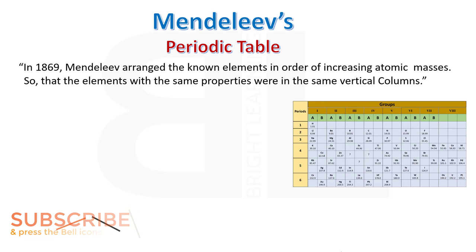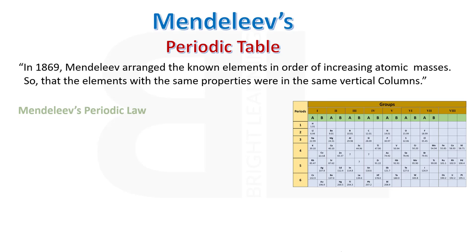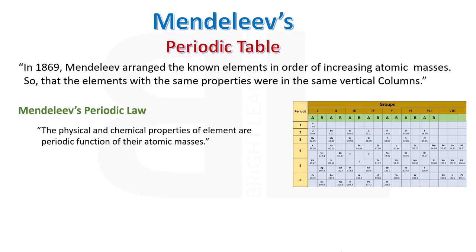In 1869, Mendeleev arranged the known elements in order of increasing atomic masses, so that the elements with the same properties were in the same vertical columns. This was a significant contribution in the history of classification of elements. Mendeleev compiled his work in the form of Mendeleev's periodic law. According to this law, the physical and chemical properties of elements are a periodic function of their atomic masses.